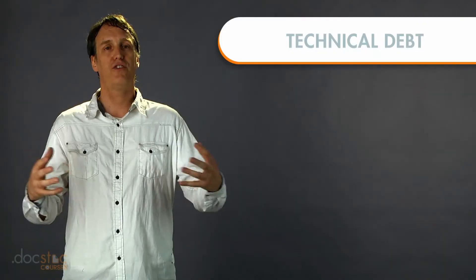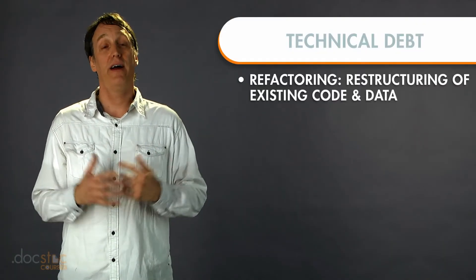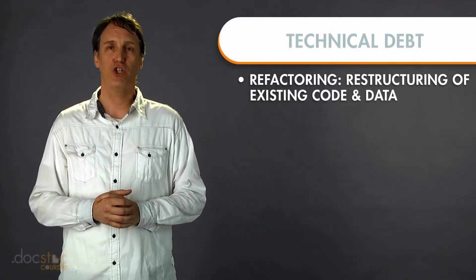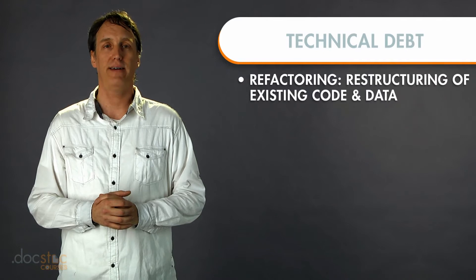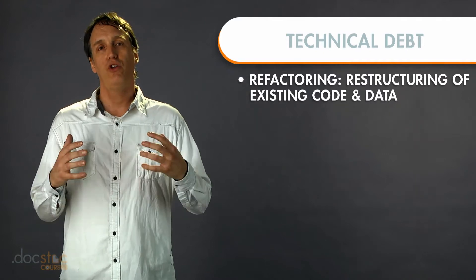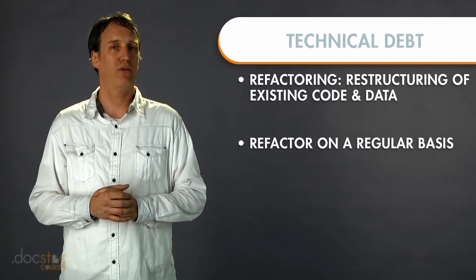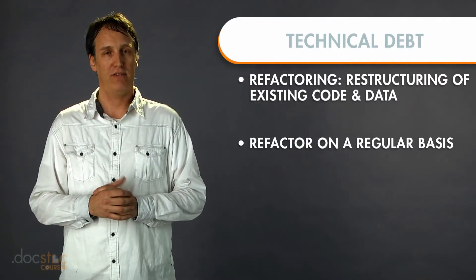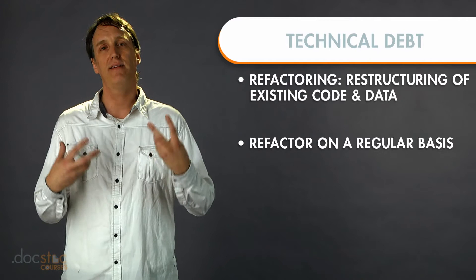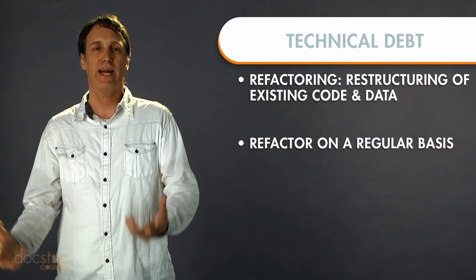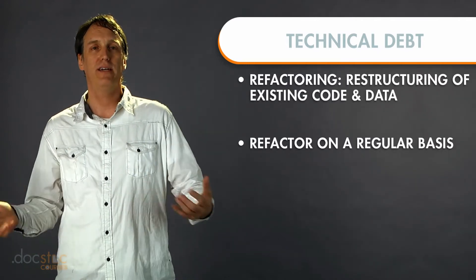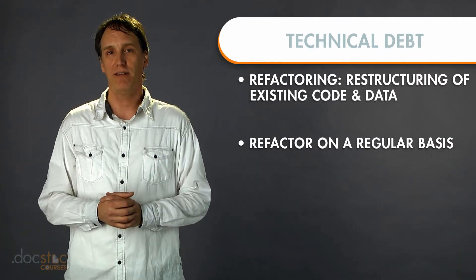When you make decisions to take a shortcut, you need to log the impact of that decision. There's a technology term called refactoring, and this is the restructuring of existing code and data. You should be refactoring your code on a regular basis. You should be constantly updating and tuning the back-end code, data, and infrastructure that make up your business.